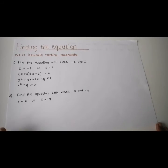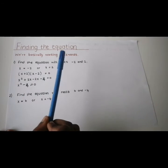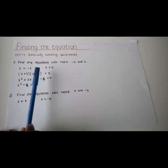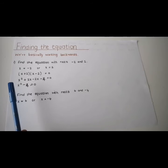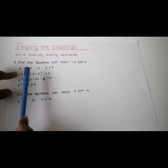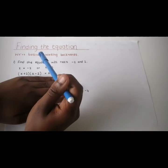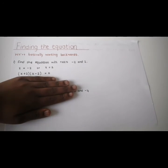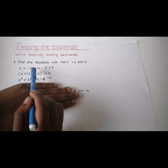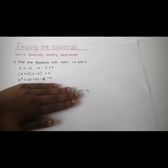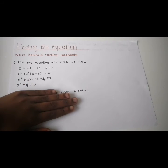Now the last topic for this video is finding the equation — basically working backwards. Before, we had the equation and found the roots; now they give us the roots and we find the equation. It says find the equation with roots negative 2 and 2. So x equals negative 2 or x equals 2 means x plus 2 times x minus 2 equals 0. Multiply everything out — foil it — and you get x squared plus 2x minus 2x minus 4, which simplifies to x squared minus 4 equals 0.